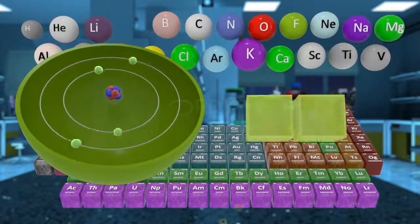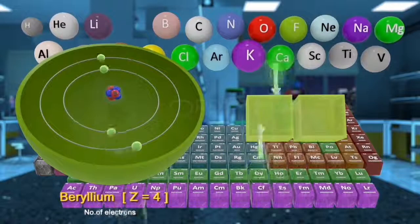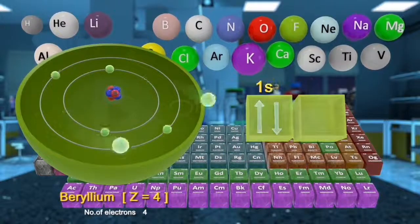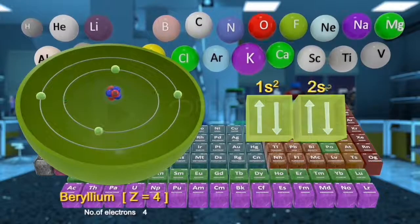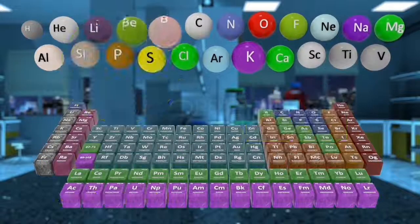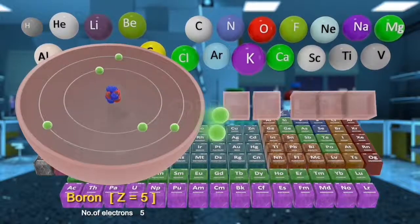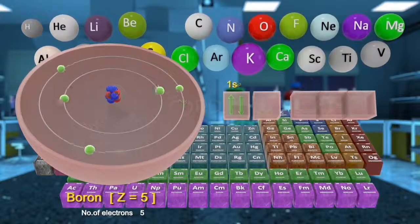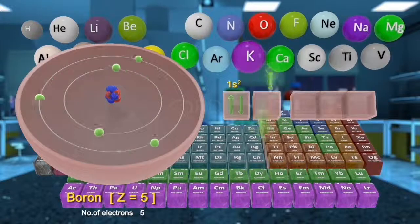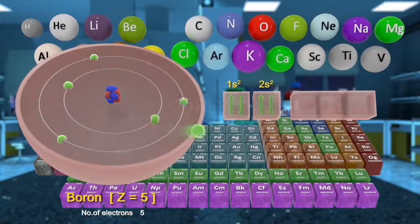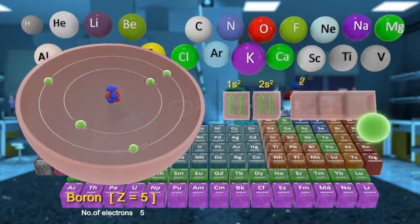Beryllium has four electrons. First two electrons fill the one s-orbital, and remaining two are filled in two s-orbital. Boron has five electrons. Two electrons fill the one s-orbital, next two electrons fill the two s-orbital, and the last electron fills the two p-orbital.